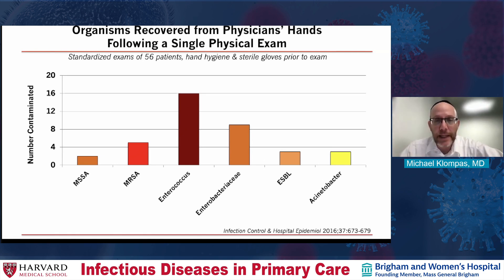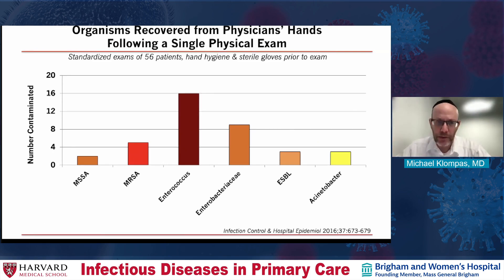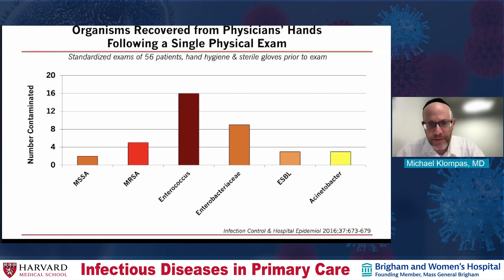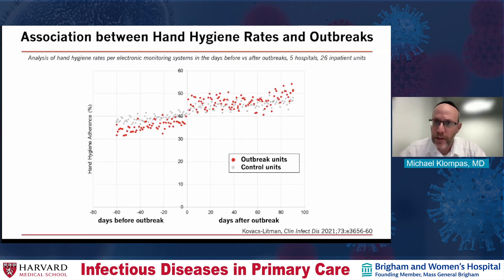This is an analysis of the organisms picked up from 56 patient encounters. These are standardized examinations where the clinician performs hand hygiene and then wears sterile gloves, so you could see what was actually acquired just from that specific encounter alone. And you can see aureus, MSSA, MRSA, Enterococcus, Enterobacteriales, ESBL, Acinetobacter — you name it, it's nasty, it's there. And of course, you can pass it onto your patient.